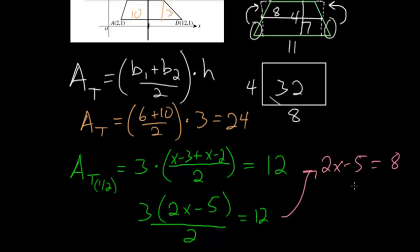And adding 5 to each side, we have that 2x equals 13. And dividing by 2, x is 13 halves, which is the same thing as 6.5.